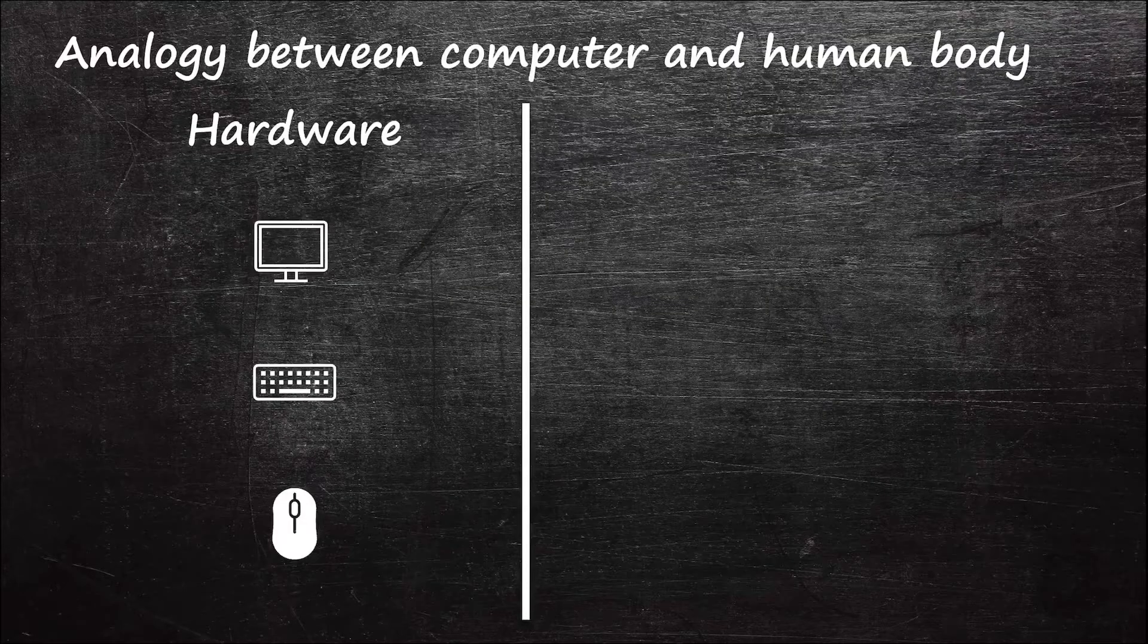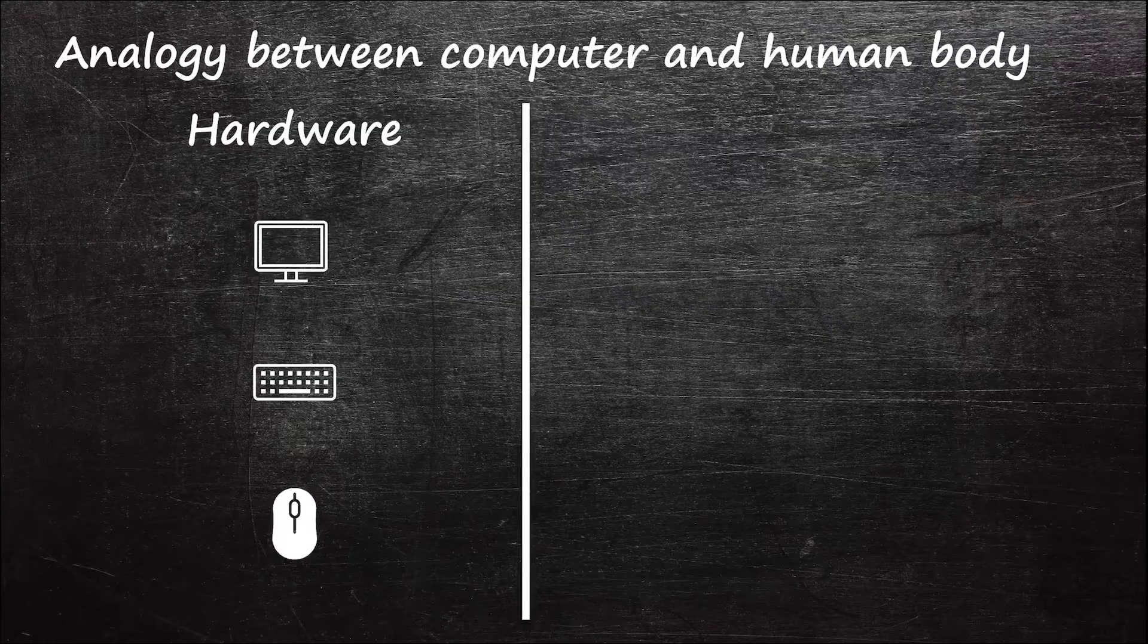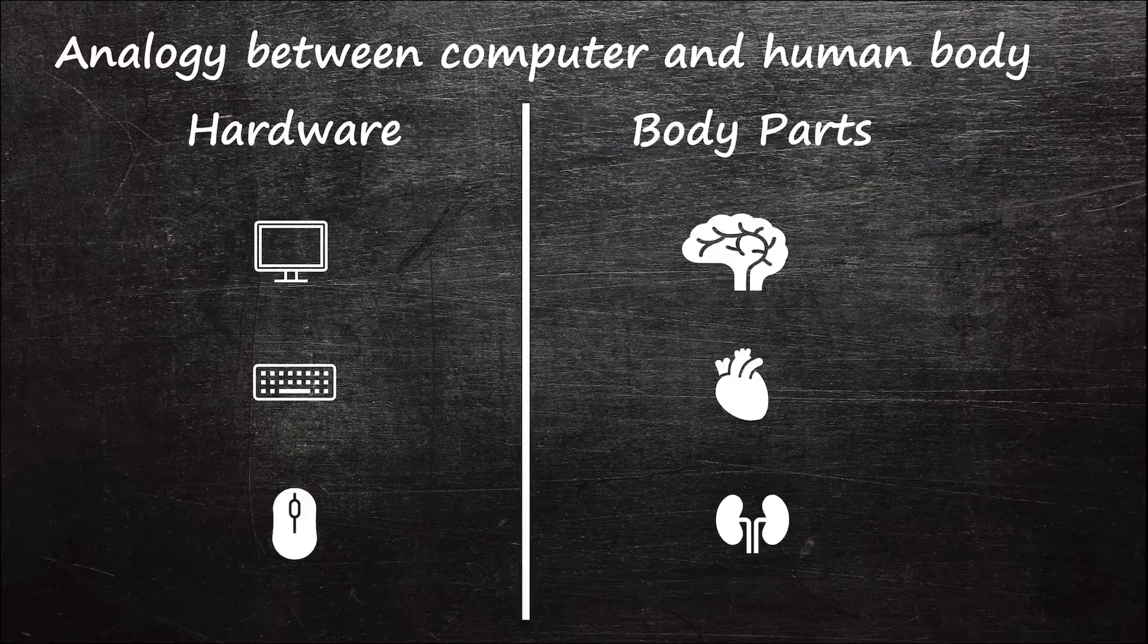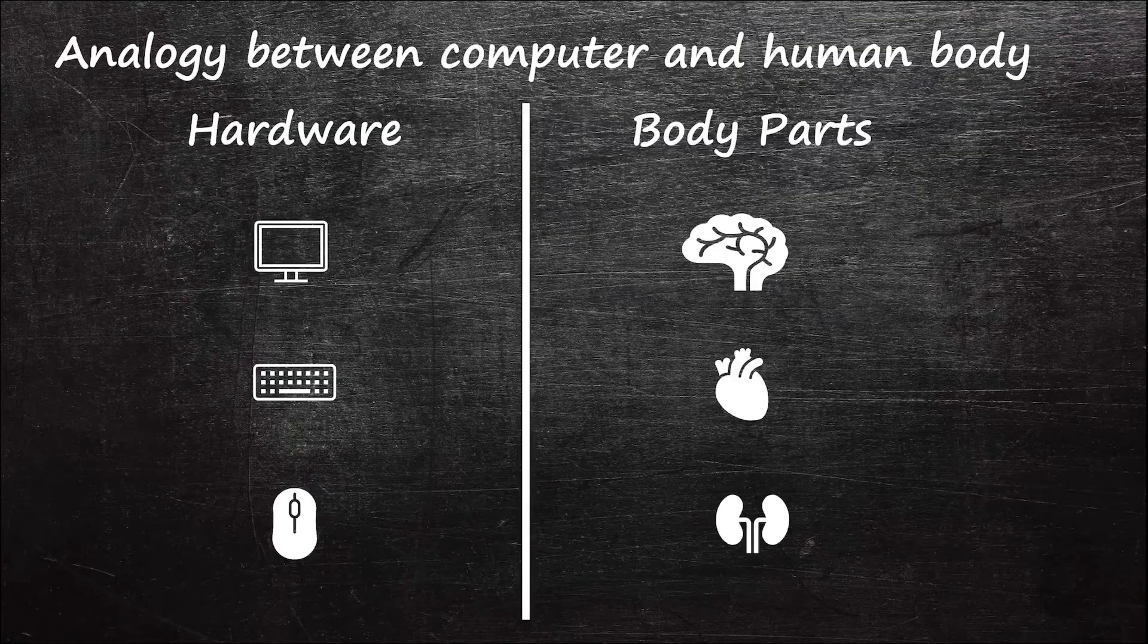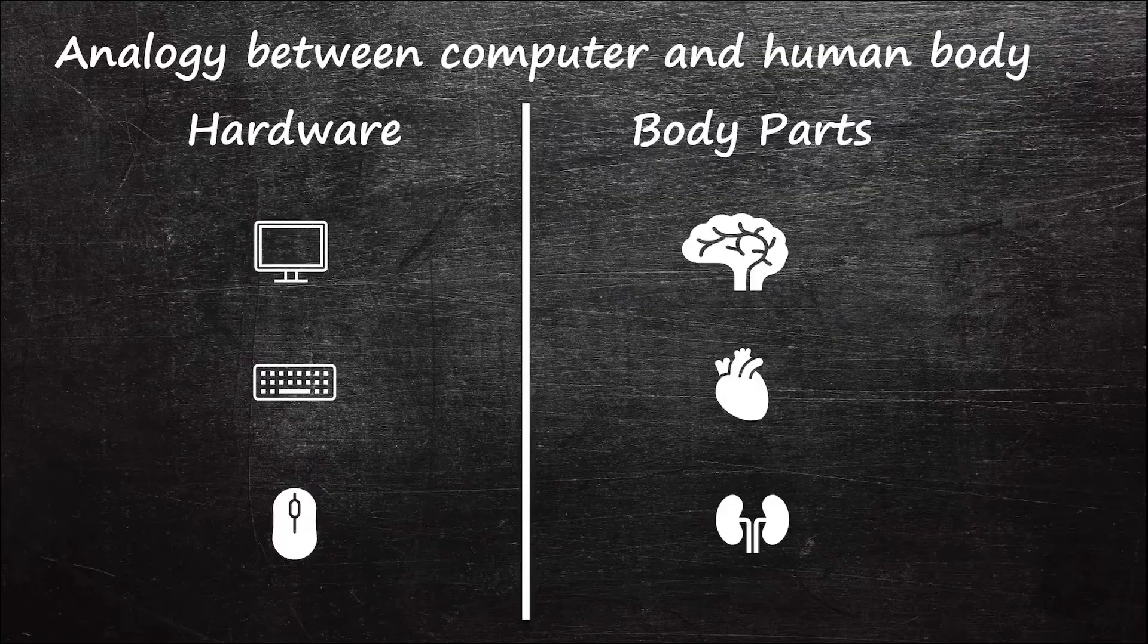An expert who studies these computer parts is called a hardware engineer. Similarly, the human body is made up of parts, organs like brain, heart, kidneys, and so on, and a person who studies the structure of these organs is called an anatomist.